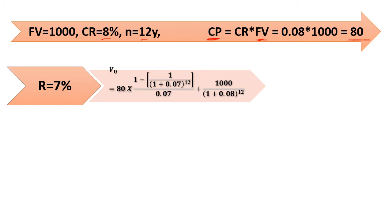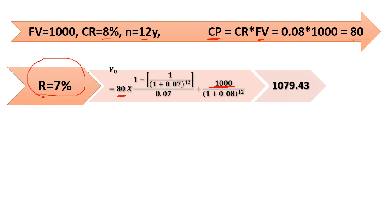We apply the bond valuation equation: multiply the coupon payment of 80 dollars by the present value interest factor for annuity using the required rate of return of 7%, plus the present value of the face value received at the end of 12 years. Bond value equals 1,079 dollars. In the case where the rate of return is less than the coupon rate, this bond sells at a premium.